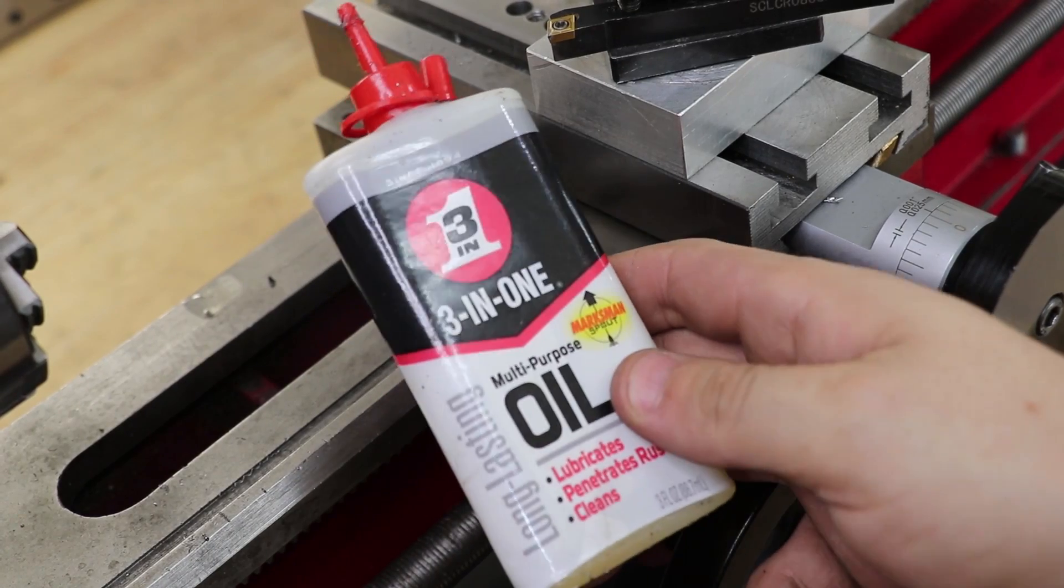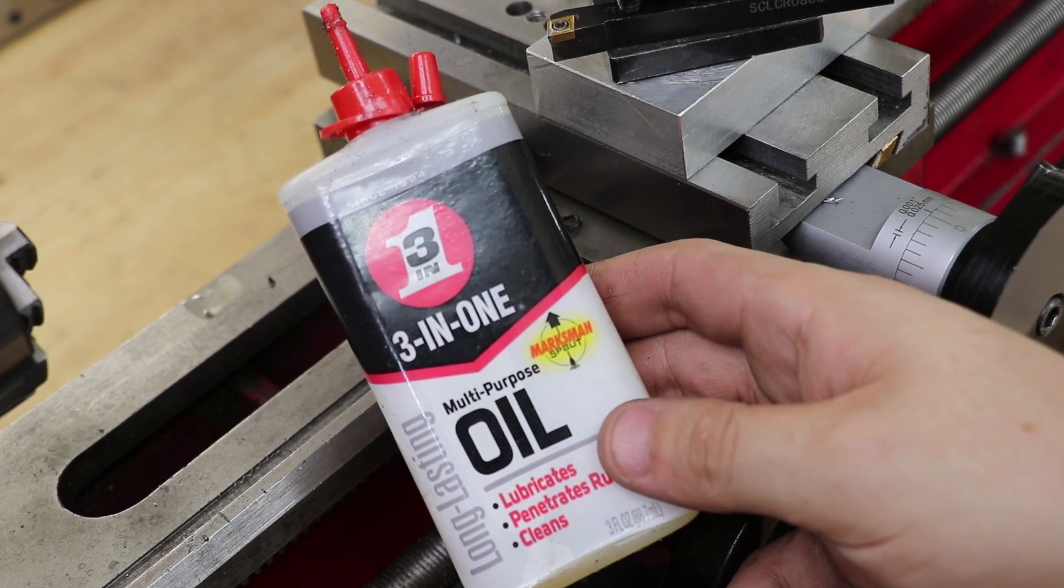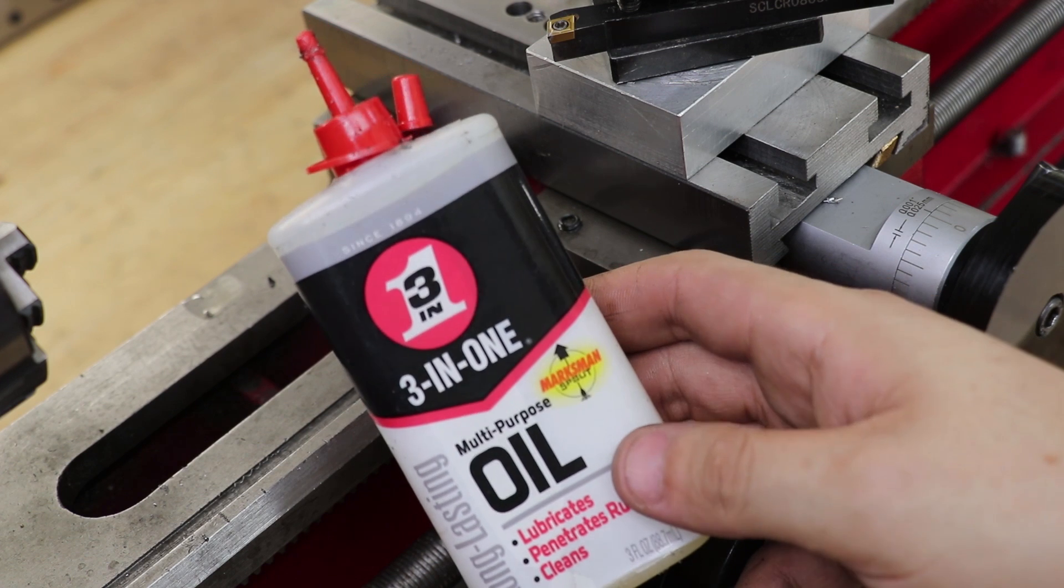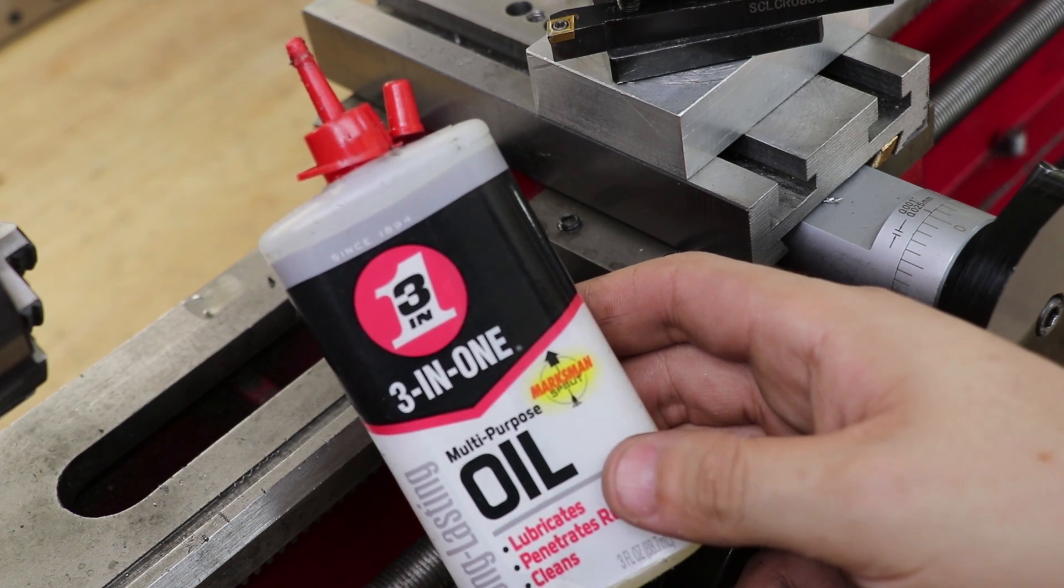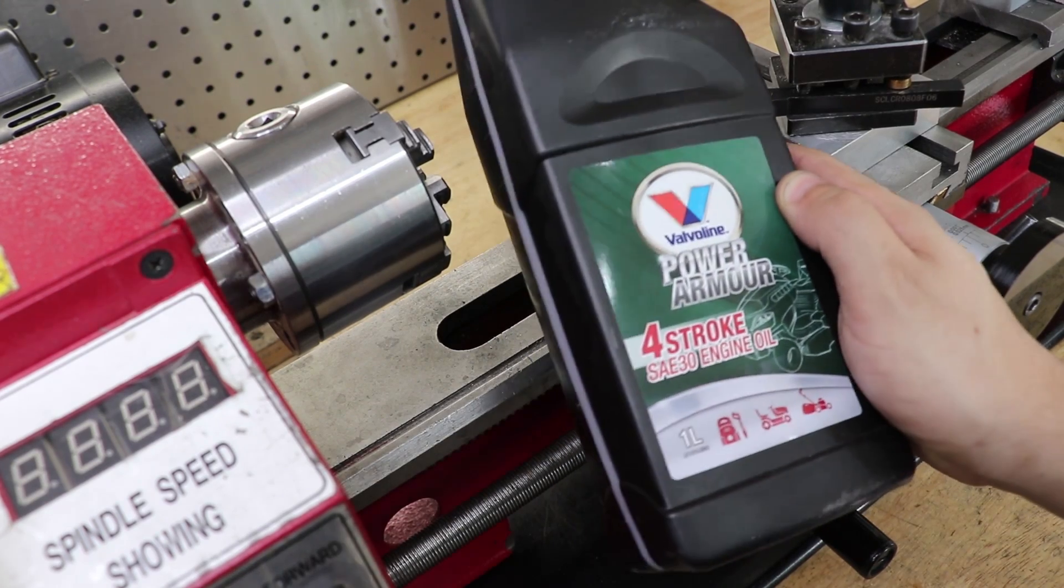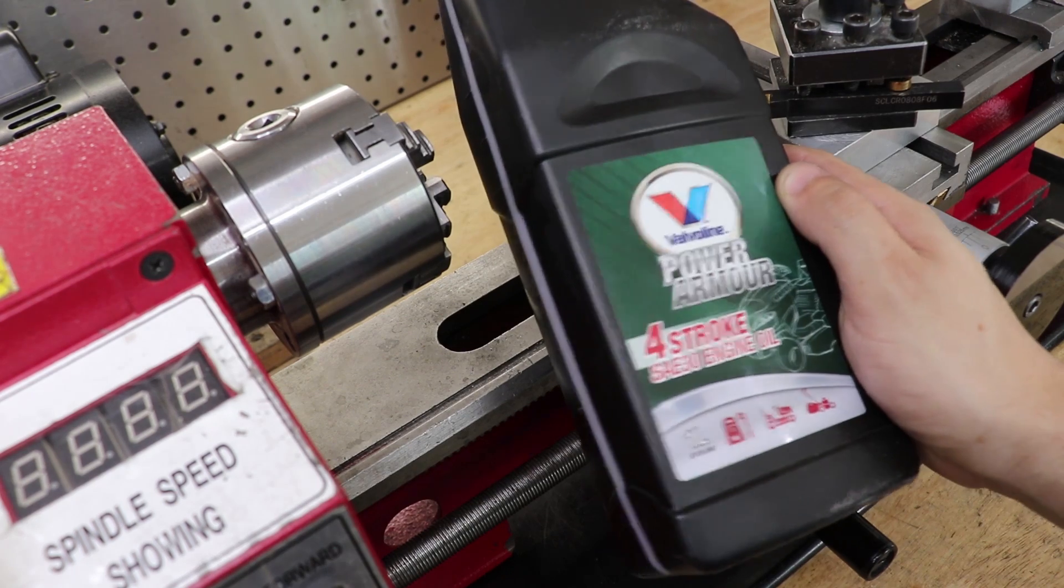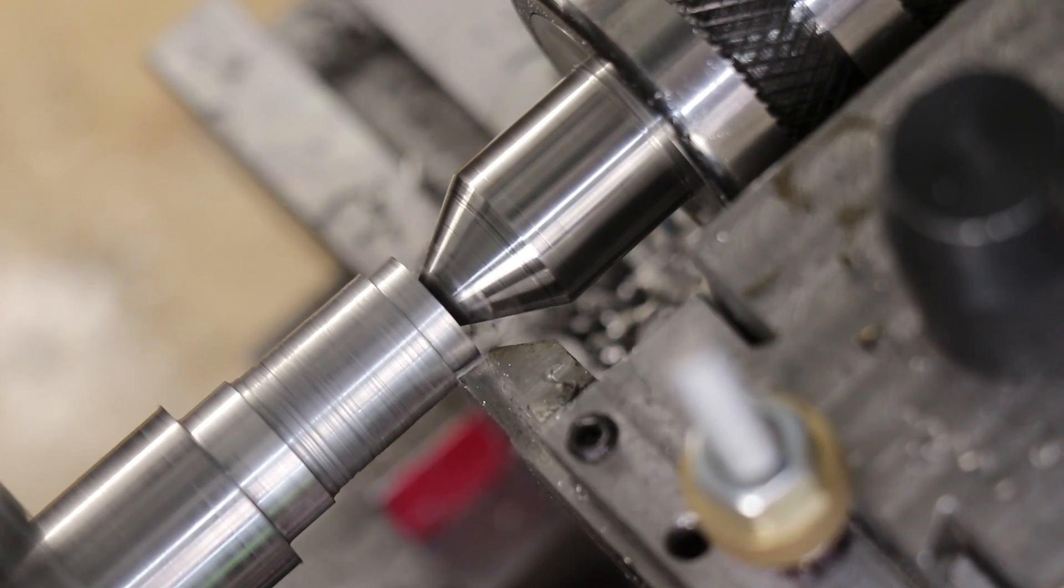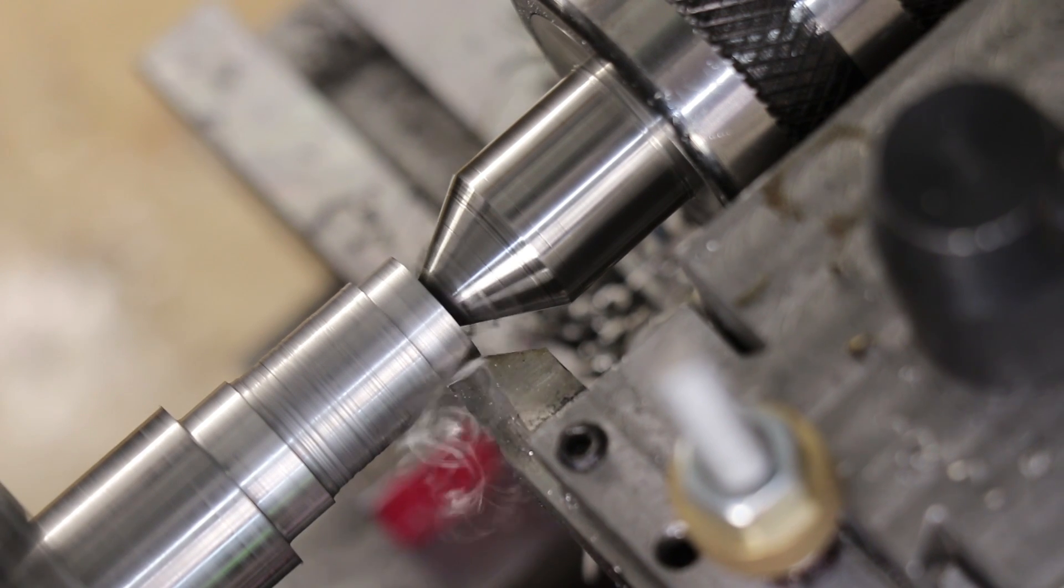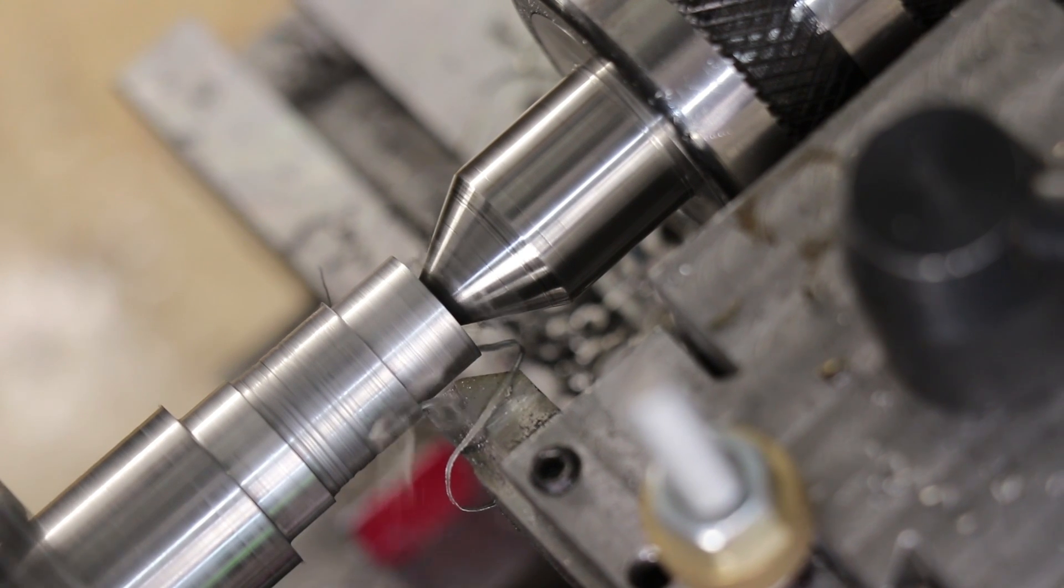Now, this might be a bit controversial, but if you can't get any, I'd just use any machine oil that you can get your hands on. Any oil is going to be better than no oil. I've seen people use chainsaw bar oil, and for the first few months of getting this lathe, I actually used 3-in-1 oil and 4-stroke motor oil on the ways. It's certainly not recommended, but any oil is going to be preferable to using no oil at all, at least until you get your hands on some proper stuff.